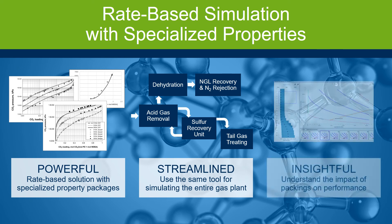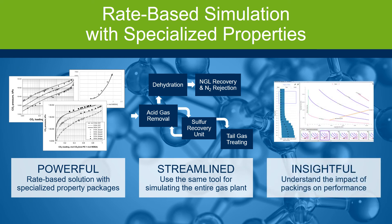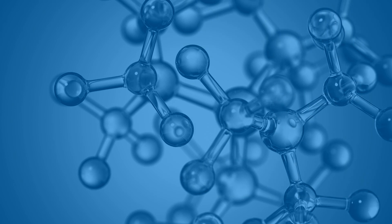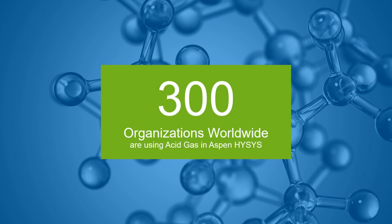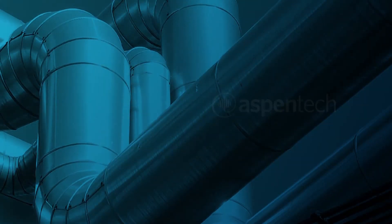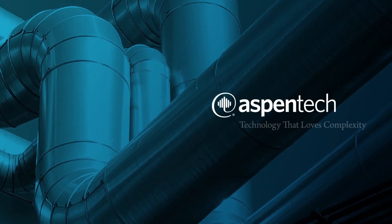Use the insightful column hydraulic analysis capability to view the whole column and the impact of solvents and packings on performance. The acid gas functionality has been implemented by more than 300 organizations worldwide. Imagine the value of this application for your organization. Learn more at AspenTech.com.